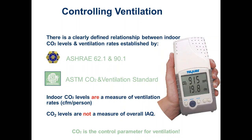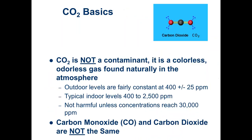ASHRAE 62.1 is our ventilation standard for the country, and the International Mechanical Code piggybacks off that — both have provisions for CO2-based DCV. ASHRAE 90.1 is our energy standard, and the International Energy Conservation Code piggybacks off that; both also have provisions. It's pretty well established that you can use CO2 sensors in people-based occupancies to indicate and adjust the ventilation rate.